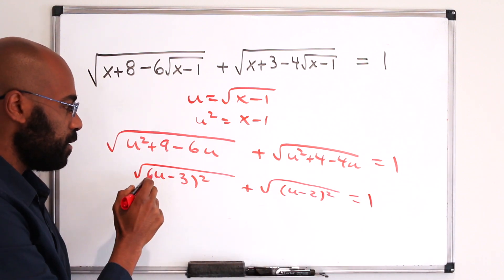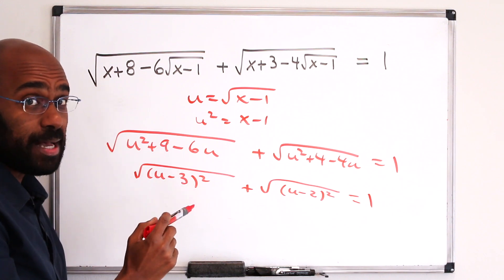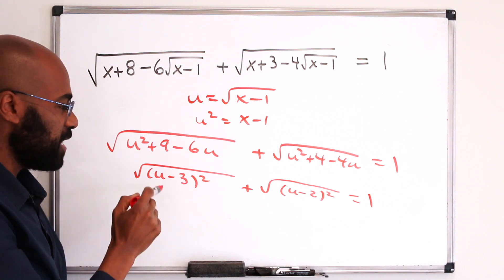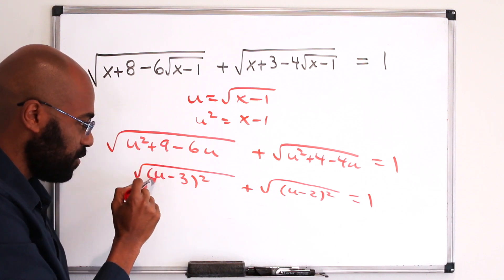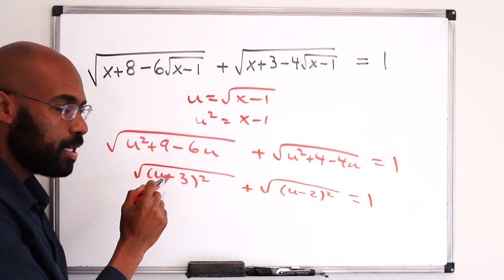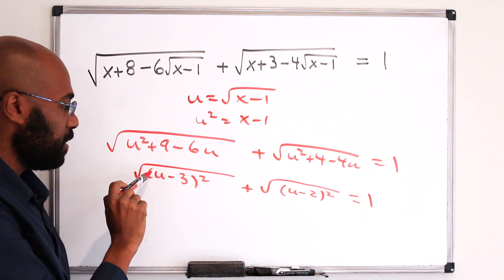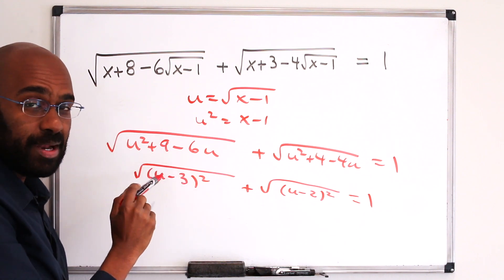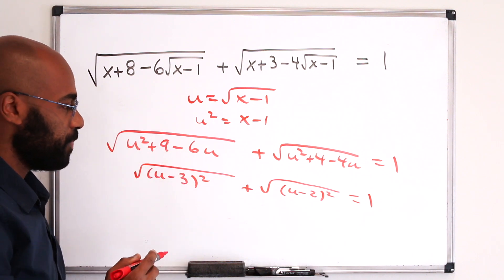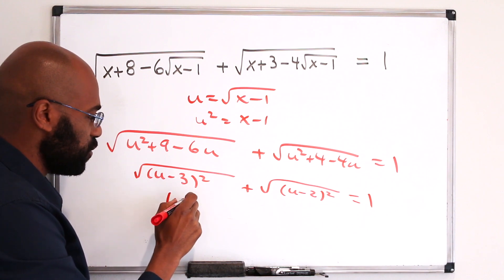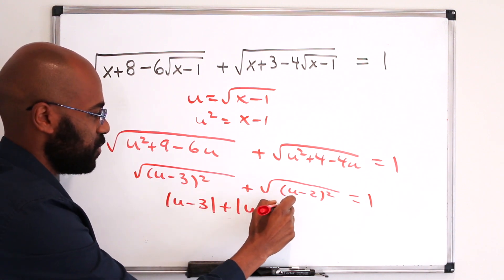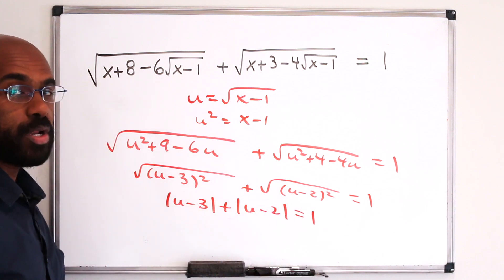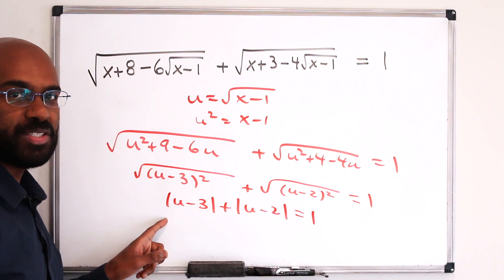And now, the square root of the square of something is its absolute value, right? For example, if this quantity here was 1, we'd get 1. But if this quantity here, u minus 3, was negative 1, then we would have negative 1 squared, the square root of that, which is 1, not negative 1. So this equation reduces to the absolute value of u minus 3 plus the absolute value of u minus 2 is 1. So what we want to do now is analyze the solutions to this equation.